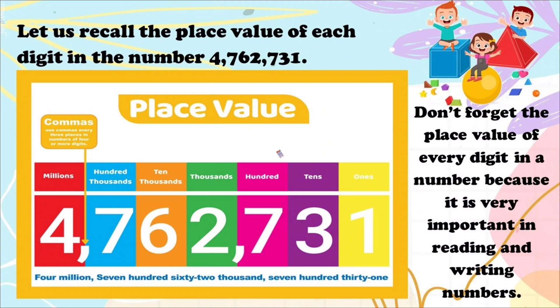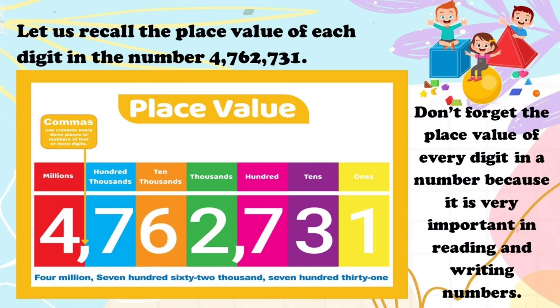Let us also recall the place value of each digit in a number. Every digit in a numeral has its own place value. Let us recall the place value of 4,762,731. Starting from the right, the place values of a 7-digit number are the 1s, 10s, 100s, 1,000s, 10,000s, 100,000s, and millions. Don't forget the place value of every digit in a number because it is very important in reading and writing numbers.